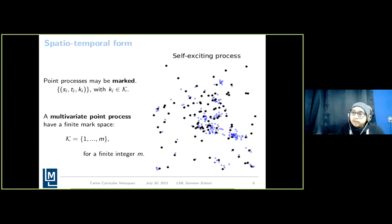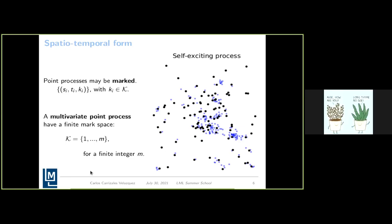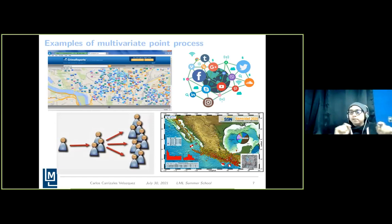Adding the spatiotemporal form, we can introduce a mark characteristic. Each event will have a spatial coordinate, a temporal coordinate, and also a mark coordinate. An example would be earthquakes, which have an epicenter, a time of occurrence, and a magnitude. This is a kind of marked spatiotemporal Hawkes process. We call it a multivariate point process when the mark space is a finite set of possible mark values for each event.